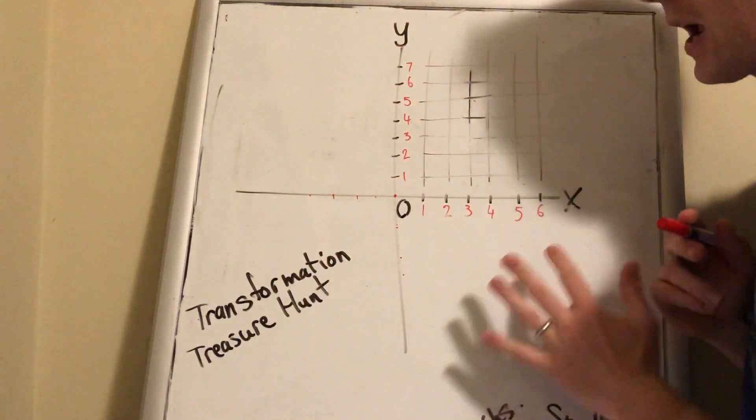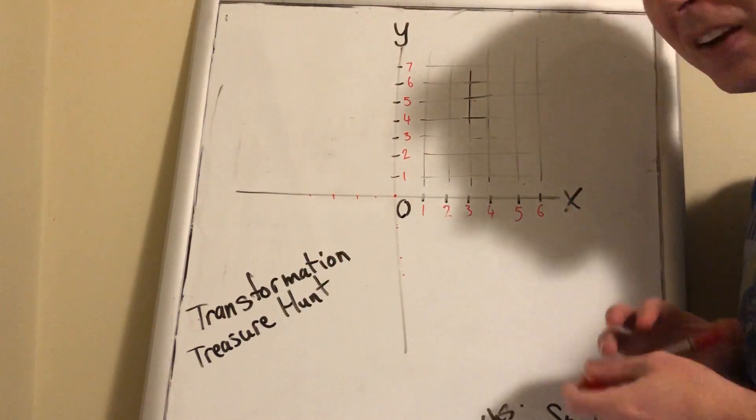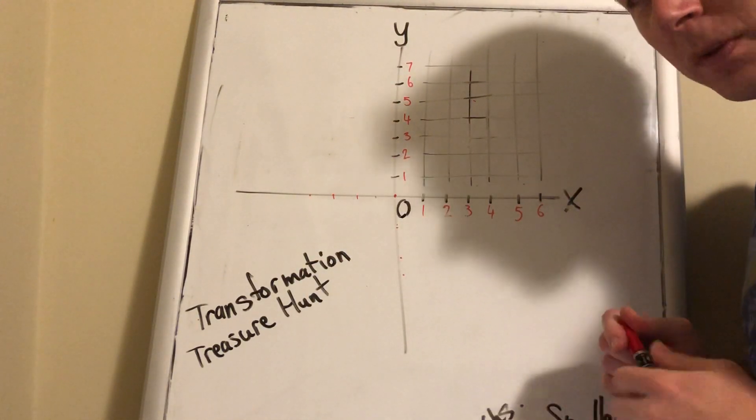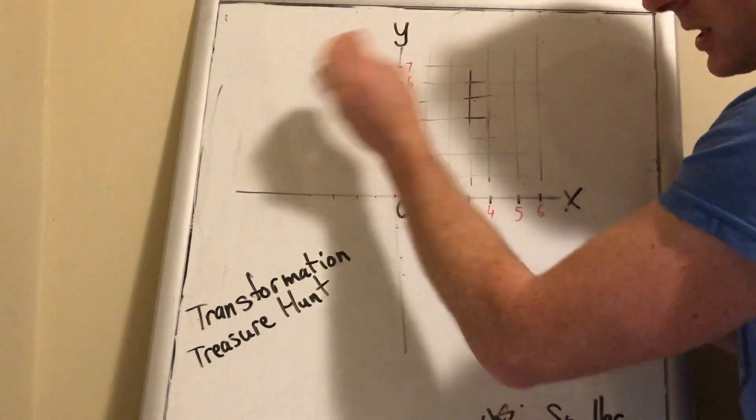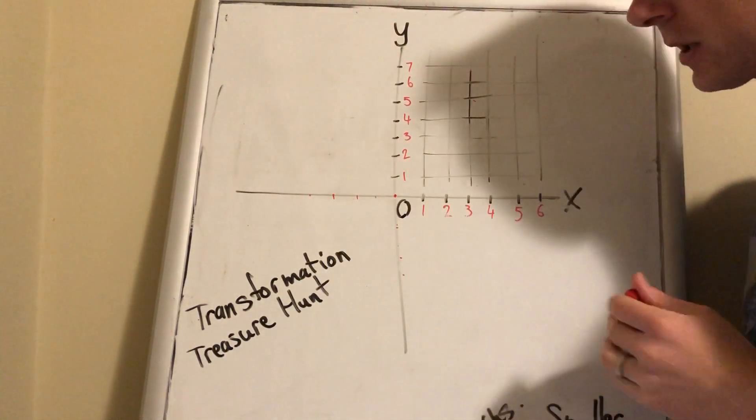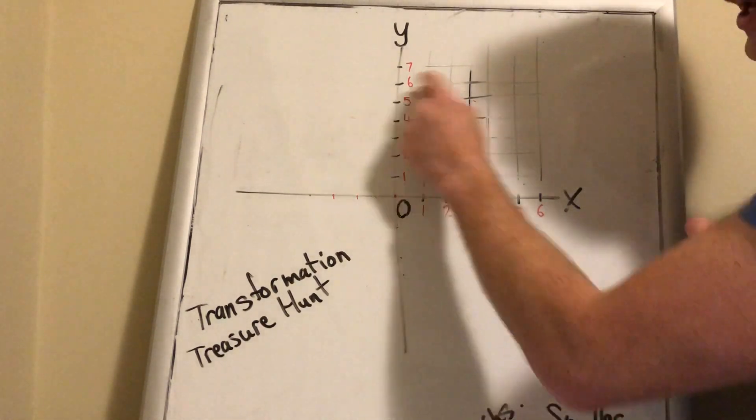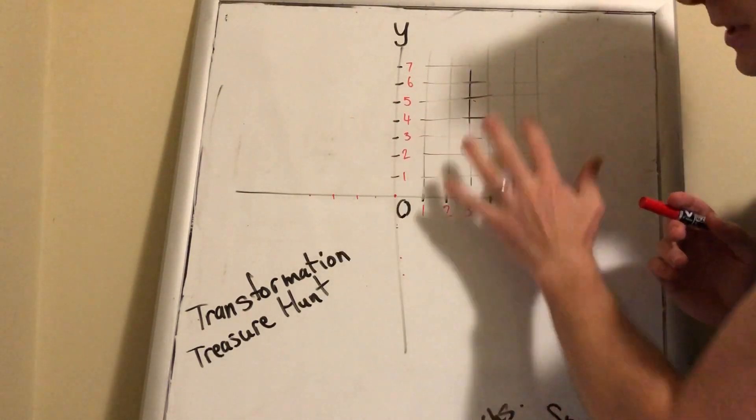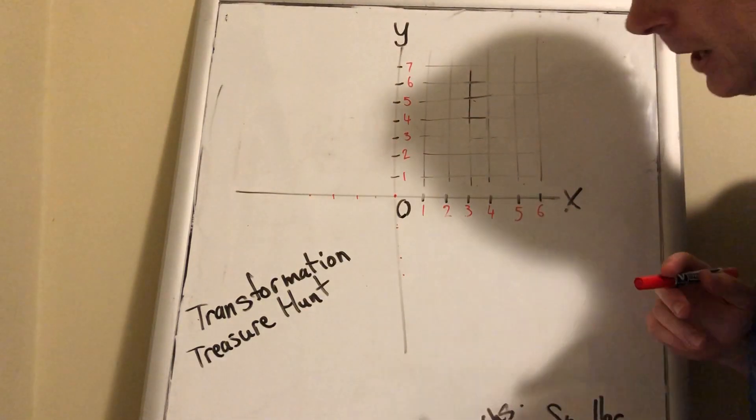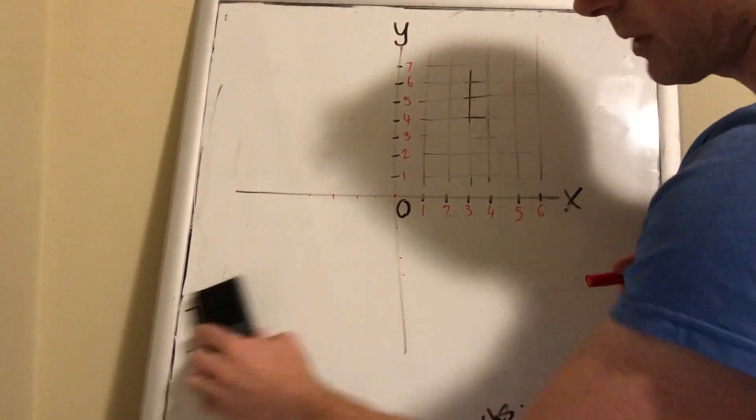You'll need an understanding of the Cartesian plane for both activities: the transformation activity, where you're drawing objects from one side to the other, and the treasure hunt activity, where you'll locate the treasure. It'll use the whole Cartesian plane. So I can rub that off now.